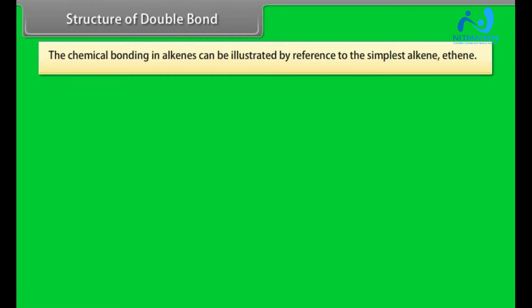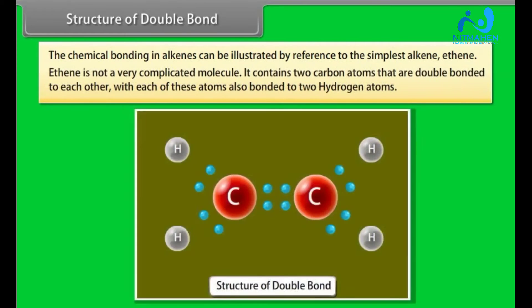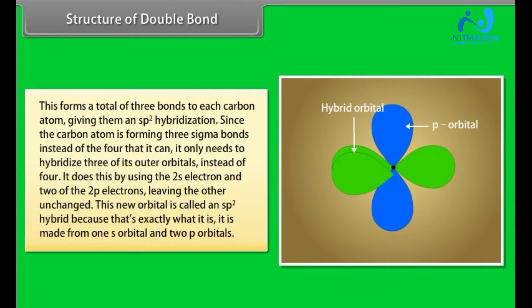The chemical bonding in alkenes can be illustrated by reference to the simplest alkene, ethene. Ethene is not a very complicated molecule. It contains two carbon atoms that are double bonded to each other, with each of these atoms also bonded to two hydrogen atoms. This forms a total of three bonds to each carbon atom, giving them an sp2 hybridization.